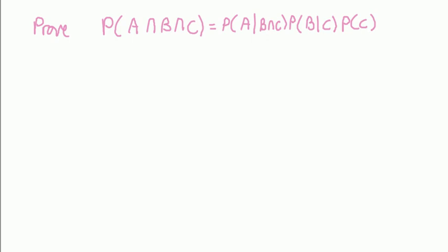Hi everyone, Phil from StatisticsMenta.com. I want to prove that the probability of the intersection of the three events A, B, and C is equal to the product of conditional probabilities times the marginal probability.